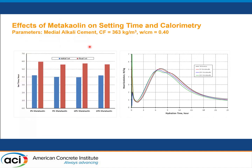Now let's move to the effect of MetaKaolin on concrete performance. This result shows the effect on setting time. This particular example has a cement content of 360 kg per cubic meter, a water-to-cement ratio of 0.4, and three levels of MetaKaolin were used: 5%, 10%, and up to 15% of total cementitious replacement. You can see for both initial set and final set, MetaKaolin doesn't change much. To confirm this, we also ran calorimetry. Up to 15% MetaKaolin replacement, the heat evolution curves almost overlap each other, indicating MetaKaolin doesn't have much effect on setting time.